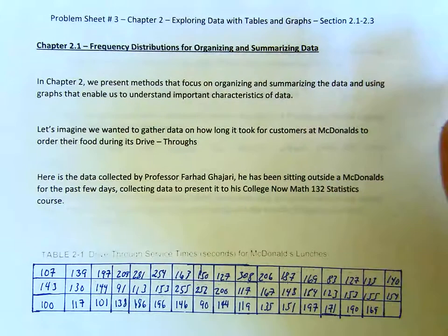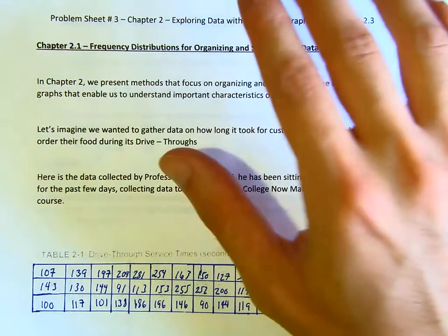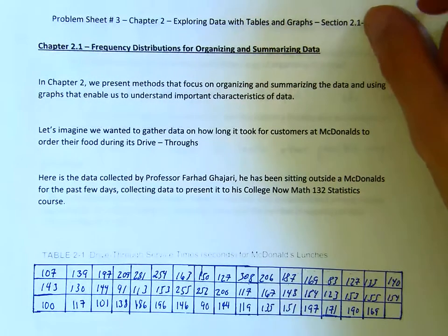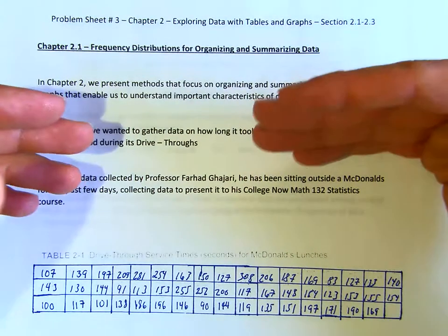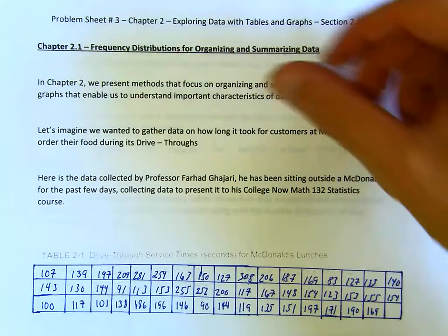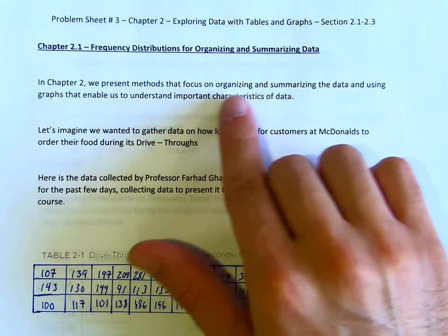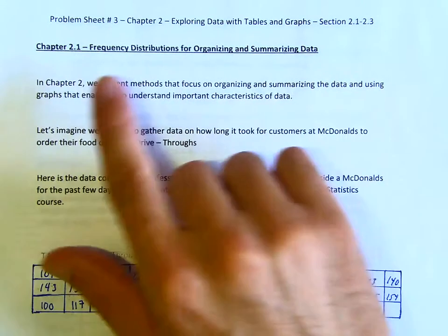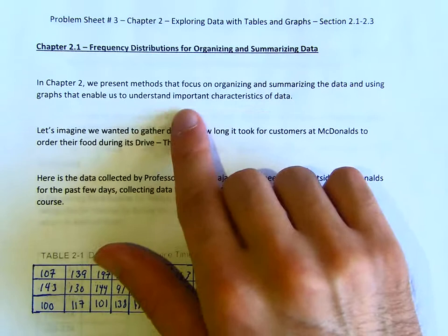All right, welcome everybody. We're going to begin Chapter 2, and within Chapter 2, for this video we'll just do 2.1, but I'll do a little intro and we'll go through the lesson. In Chapter 2, we present methods that focus on organizing and summarizing data, and using graphs that enable us to understand important characteristics of data.